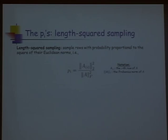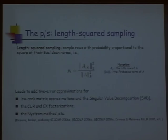That's a very simple probability distribution, very easy to compute — just make a pass through your matrix and you're done. It has been explored a lot in the literature over the past 15 years, and it leads to what would be called additive error approximations: approximations for things like the singular value decomposition, approximating left and right singular vectors and singular values, but up to additive errors, which may or may not be sufficient for your application.